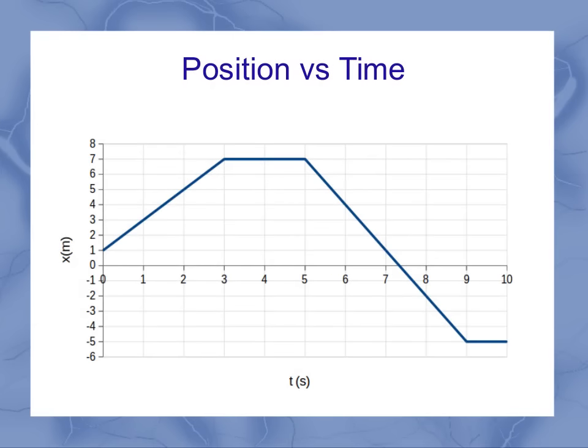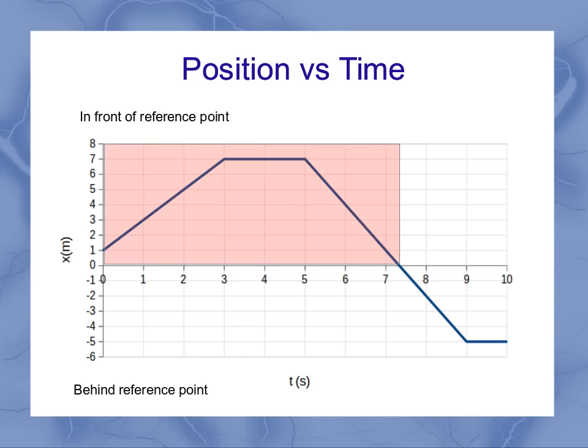Here's a simple position versus time graph. Just as a reminder, positive positions means you're in front of the reference point, and negative positions means you're behind the reference point. For this graph, we've got positions in front and positions behind. So if you're at the zero position, or crossing the x-axis, you're at the reference point.